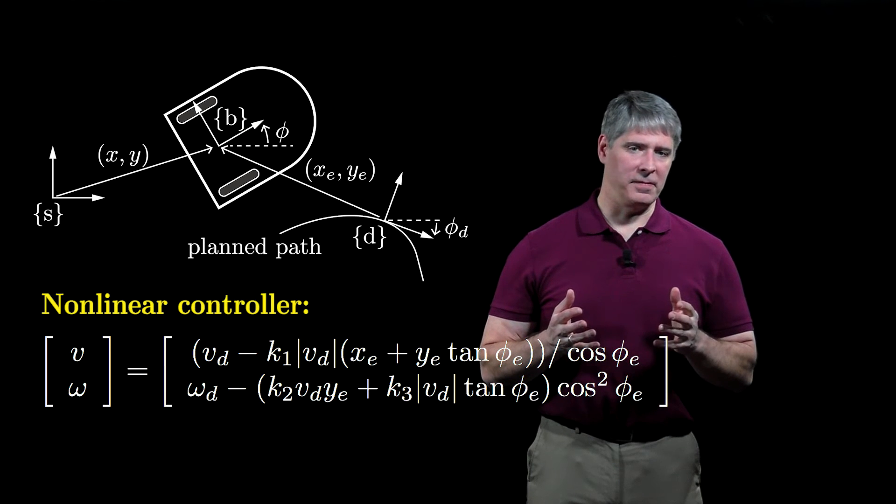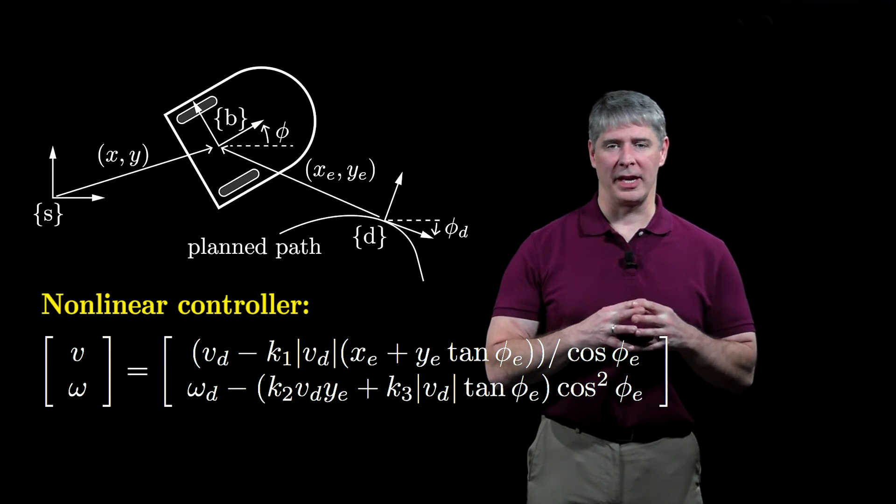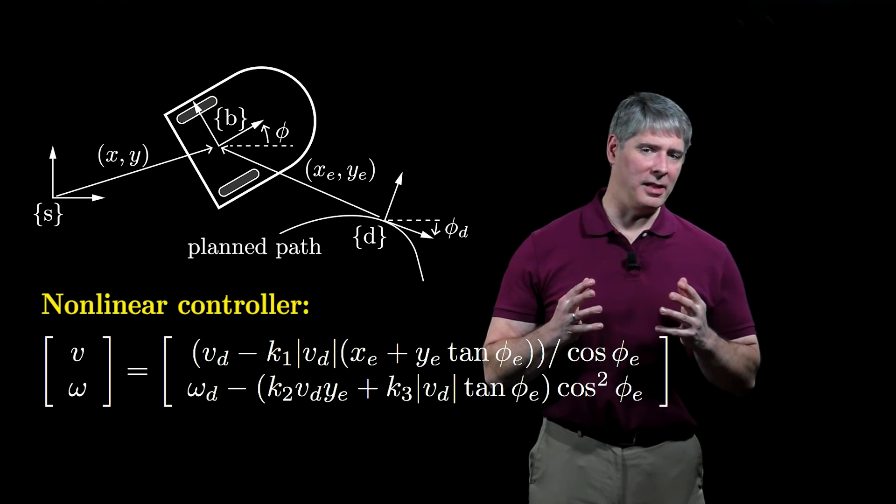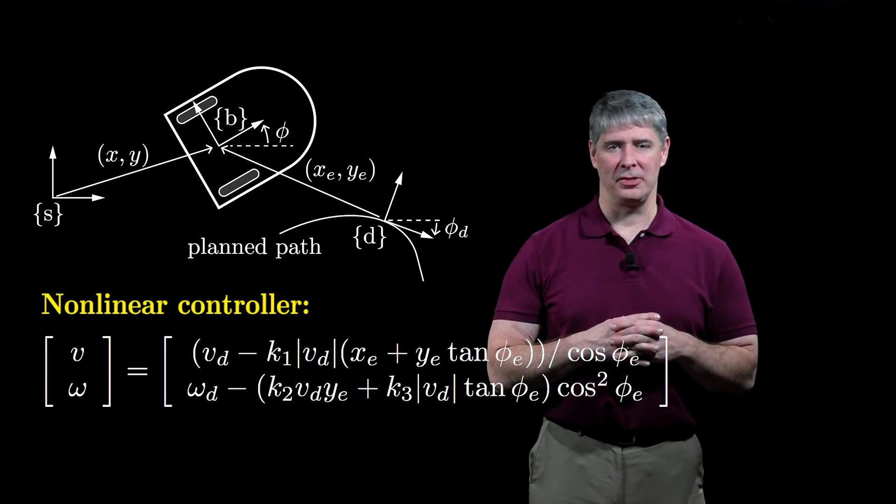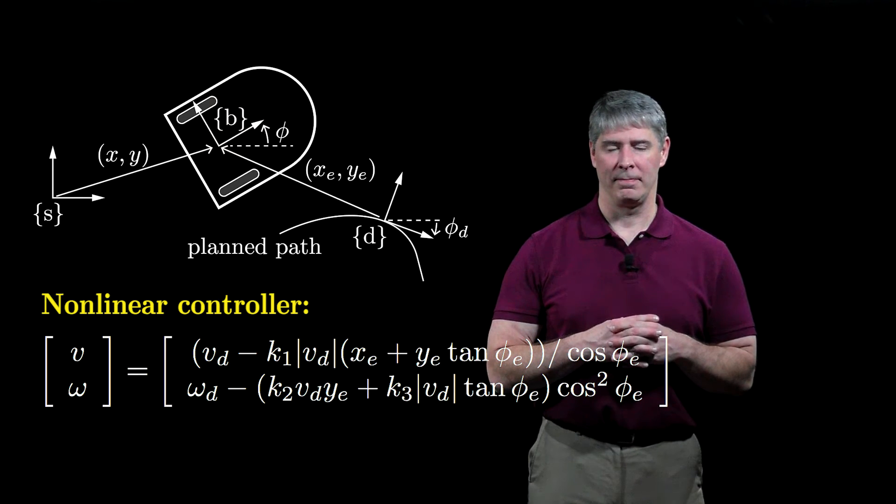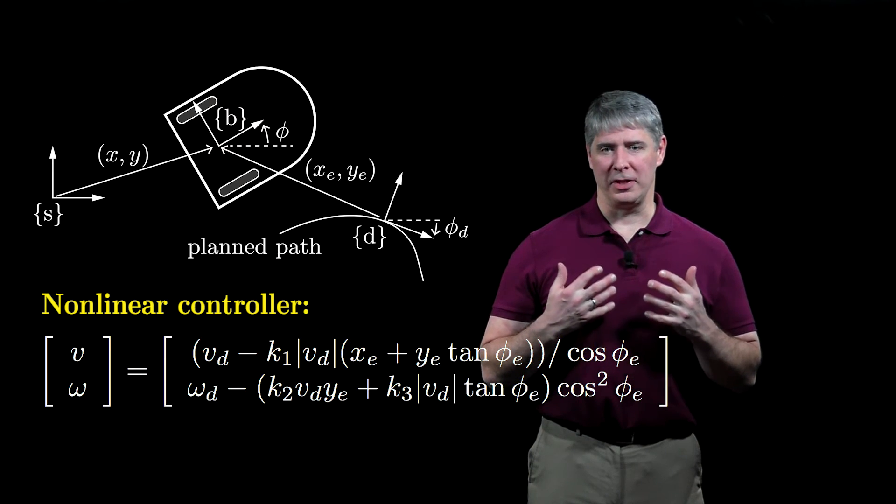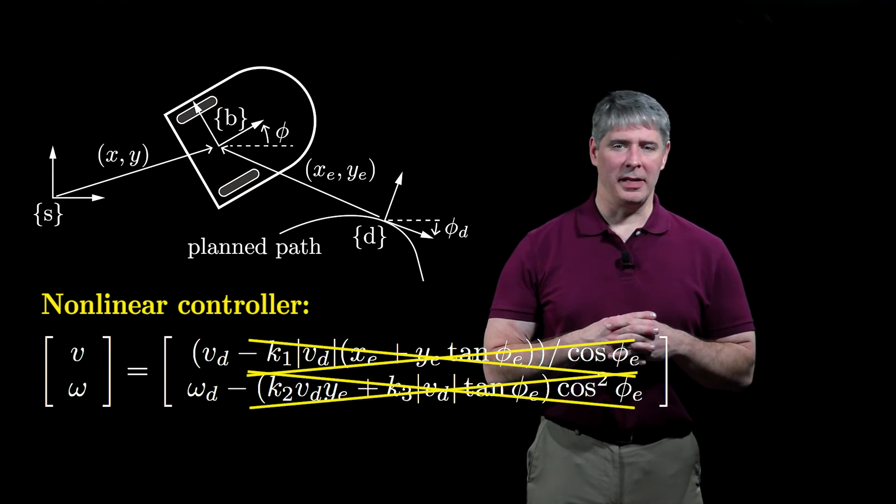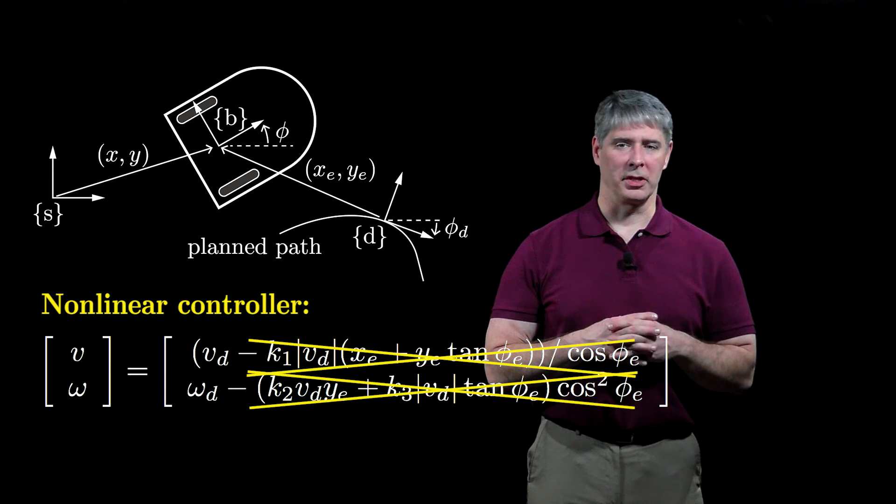The derivation of this controller and the choice of the control gains k1, k2, and k3 are beyond the scope of this video, and I suggest you consult the references in the book. But notice that if the error reduces to zero, the commanded controls reduce to the feedforward controls.